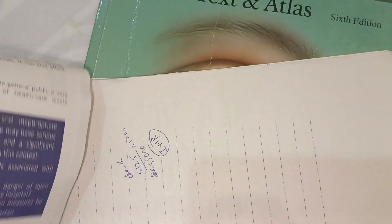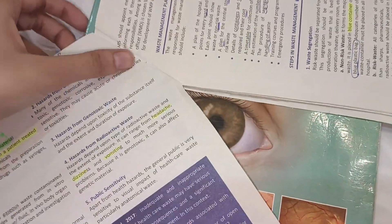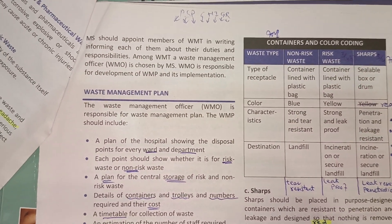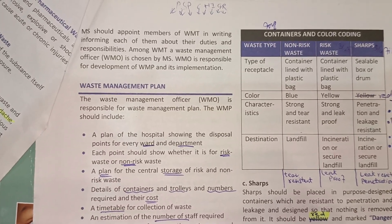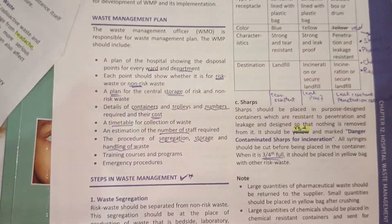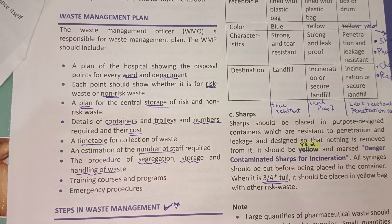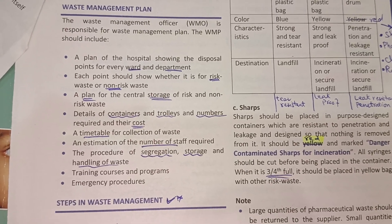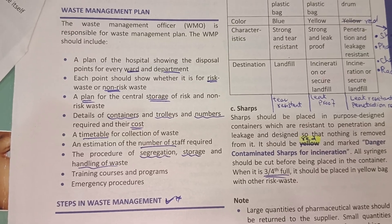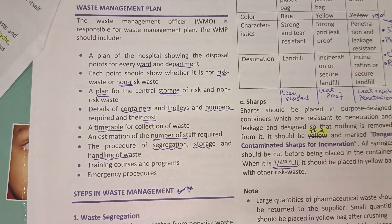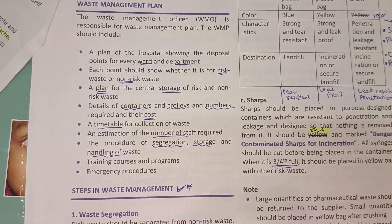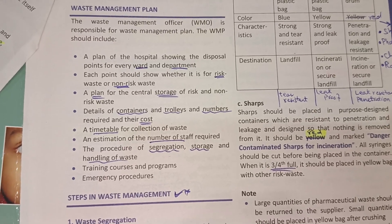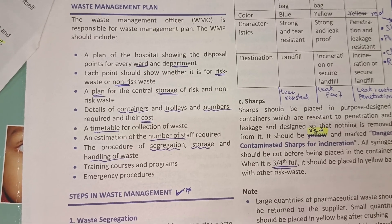The waste management team has various responsibilities. They have to make plans for waste management and then implement them. They determine collection schedules, decide how much staff is needed, plan how to handle storage, on-site transport, and off-site transport. They also assess how many wards are in each department and the cost involved.